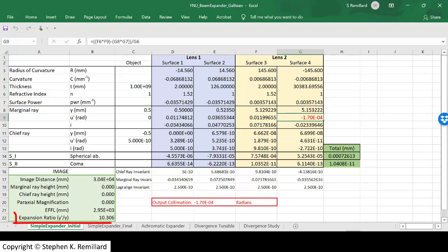The beam expansion ratio, which is the height of the output beam at the fourth surface divided by its height coming in at the first surface, is 10.3, not 10.0. So it's not exactly as designed, but that's okay.